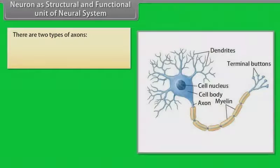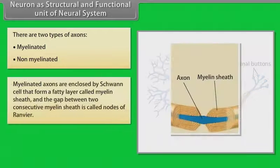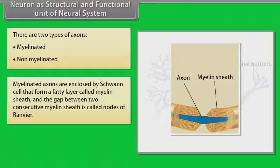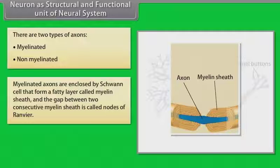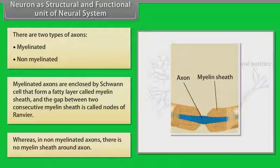There are two types of axons: myelinated and non-myelinated. Myelinated axons are enclosed by Schwann cells that form a fatty layer called myelin sheath, and the gap between two consecutive myelin sheaths is called nodes of Ranvier. Whereas in non-myelinated axons, there is no myelin sheath around the axon.